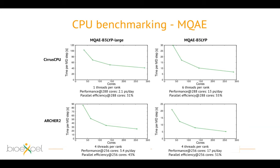Looking at the effect of QM cell size with B3LYP on the MQAE system: increasing each linear dimension by a factor of two leads to an eightfold volume increase. The performance on Cirrus dropped by about a factor of six, and on ARCHER2 by a factor of five. This gives a sense of how performance scales with the linear dimension of your QM cell — somewhat better than cubic scaling.